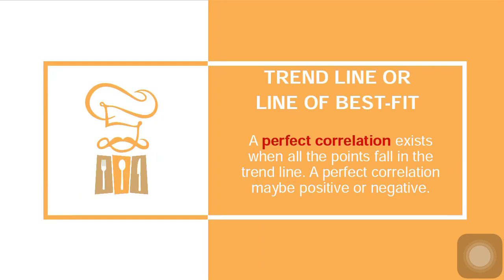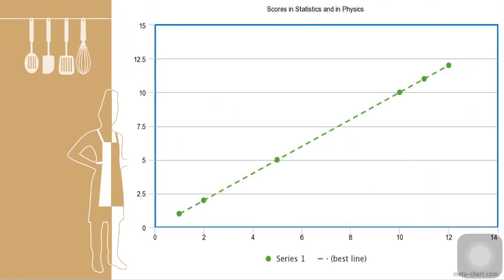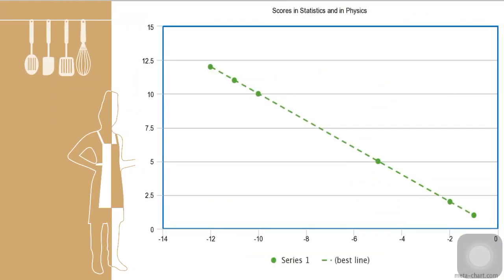A perfect correlation exists when all the points fall on the trend line, and a perfect correlation may be positive or negative. A perfect correlation happens when, once you draw a trend line, all the points are on the line of best fit. In the first example, all the points are in the trend line and the line rises to the right, so we say this has a perfect positive correlation. In the second example, all the points are on the line but the line drops — it rises to the left — so we say this has a perfect negative correlation.